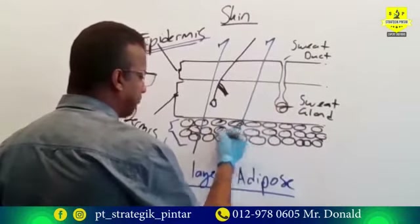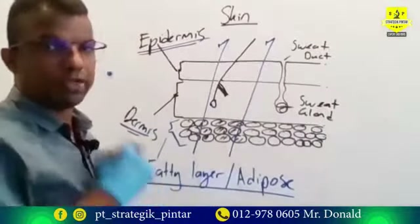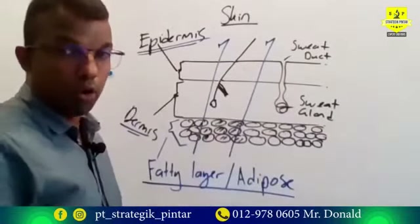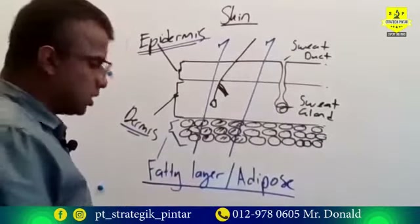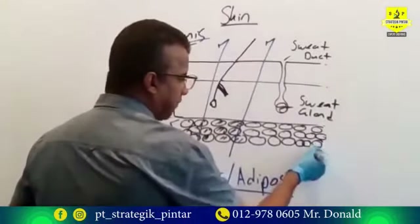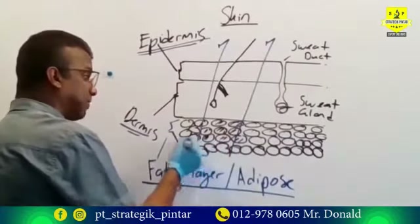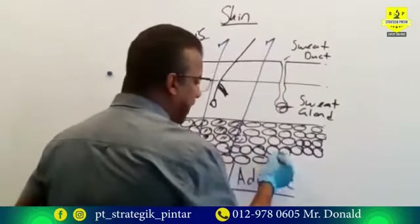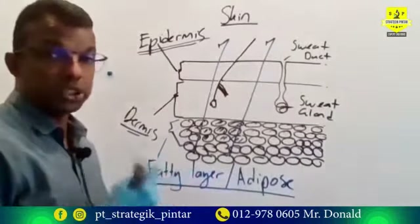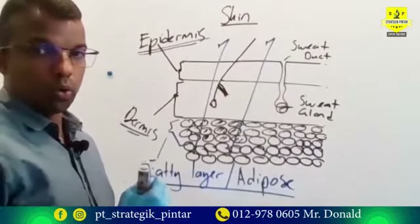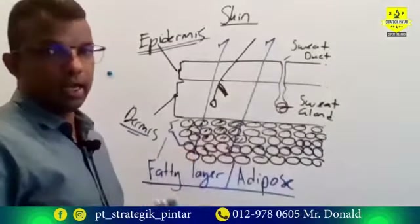When your surrounding temperature is cold, there is a high chance that you are losing heat out of your body. But because you have this adipose fatty layer as the third layer, it actually reduces the amount of heat you are losing. So if somebody is fat, that means this fatty layer under the skin is much thicker.